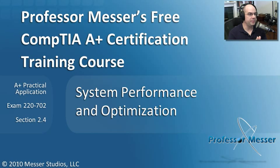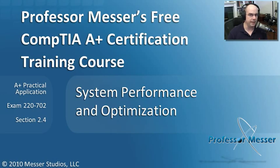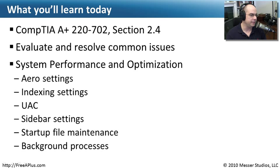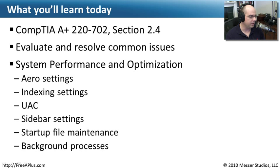Welcome to this module of Professor Messer's Free CompTIA A-plus Certification Training Course on System Performance and Optimization. I'm James Messer. In this module, we're going to go through the requirements of our Practical Application Exam 22702, Section 2.4, where we need to look at the system performance and optimization features, the Aero settings, indexing settings, UAC, sidebar, startup file maintenance, and background processes.